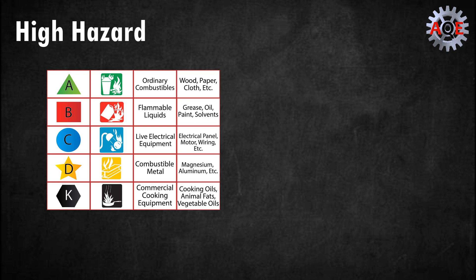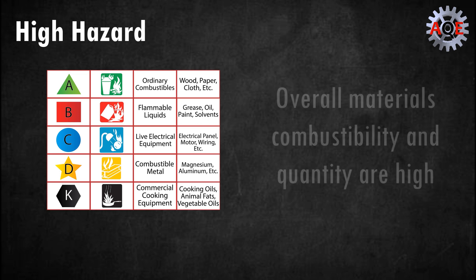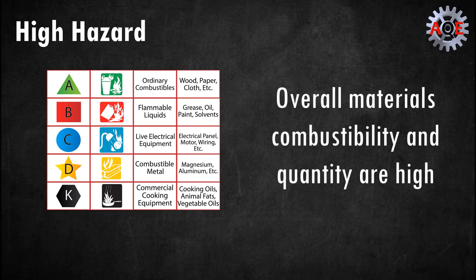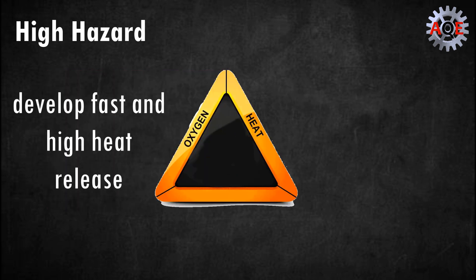High hazard. Buildings in this category are viewed as high hazard occupancies. Buildings in this category have a high content of combustibility and quantity, so if a fire started here it would likely rapidly develop and have an enhanced heat release rate.